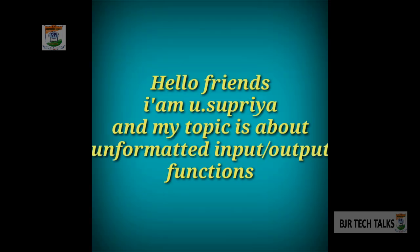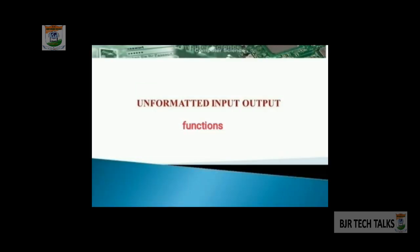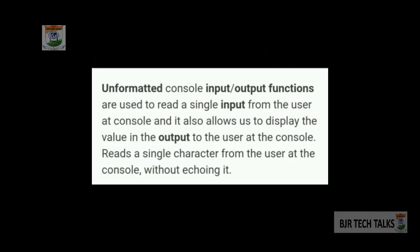Hello friends, my name is Yusupriya. I want to talk about Unformatted Input Output functions. The unformatted console input output functions are used to read a single input from the user at the console and also allow us to display a value as output — specifically a single character — without encoding it. These functions take input without any alteration and print it as-is on the output screen without any changes, working only with character data type. They do not require any conversion symbol for identification of data types, so these functions are called Unformatted Input Output functions.